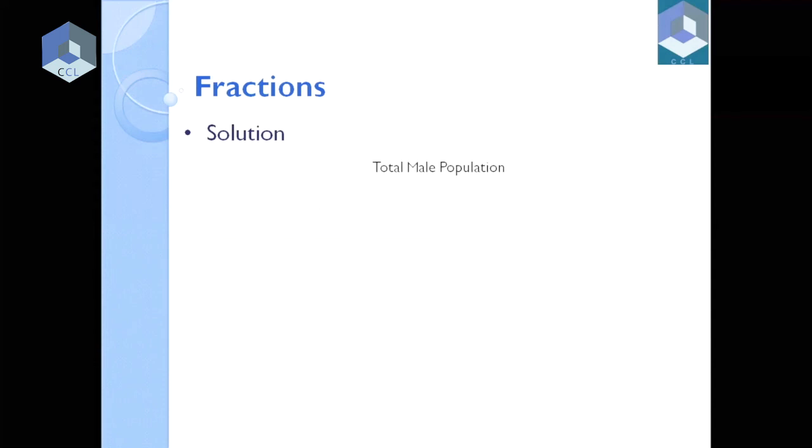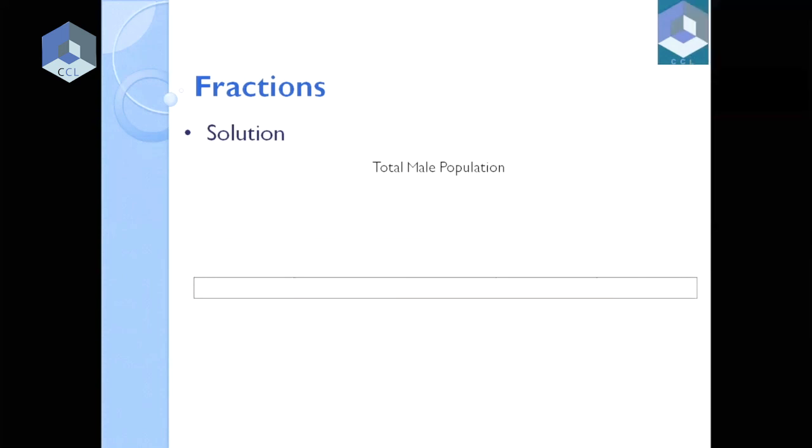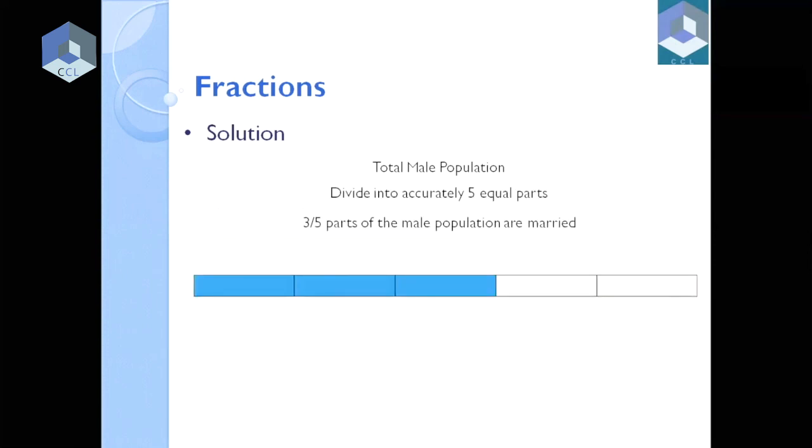So if we do this as a figure, we have done something like this, that we have divided a total bar into 5 equal parts. What is the male population? I don't know the length of the bar here, but the bar is equal to 5 parts. Why? Because our question is that 3 by 5 parts of the male are married. So we take this 3 by 5 parts. So this blue color part shows the married population of the male.